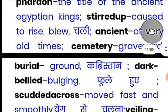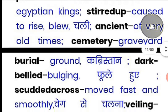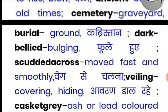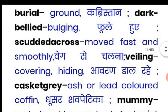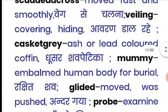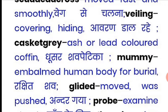'Stirred up' means causes to rise. 'Cemetery' means graveyard, burial ground — like a kabristan. 'Boldly' means with confidence. 'Dark-bellied' means bulging, fully swelled. 'Scattered' means spread around. 'Decorous' means moved fast and smoothly. 'Paling' means covering. 'Casket' — that is a grey, ash-colored or lead-colored coffin.